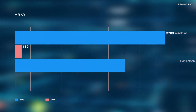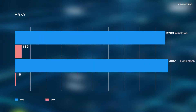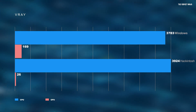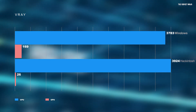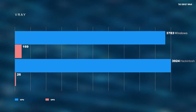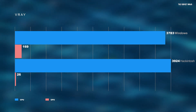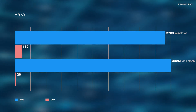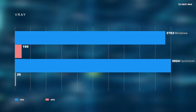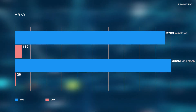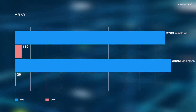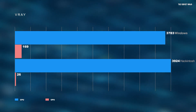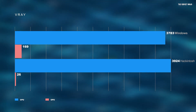In V-Ray, the Windows machine scored 3783 on CPU and 169 on GPU. The Hackintosh scored 3924 on CPU, but strangely it did not detect my GPU as the GTX 1070 — rather it picked up my integrated APU, the Vega 8, and scored just 26.